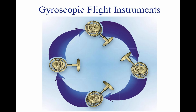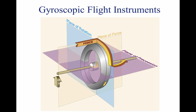An example of rigidity in space is that of a bicycle wheel. As the bicycle wheels increase speed, they become more and more stable in their plane of rotation. This is why a bicycle is very unstable and very maneuverable at low speeds, and very stable and less maneuverable at higher speeds. Precession is the tilting or turning of a gyro in response to a deflective force. The reaction to this force does not occur at the point at which it was applied; rather, it occurs at a point that is 90 degrees later in the direction of rotation.